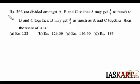Now let's see this problem. Rs. 366 are divided amongst A, B and C so that A may get one-half as much as B and C together, and B may get two-thirds as much as A and C together. Then the share of A.